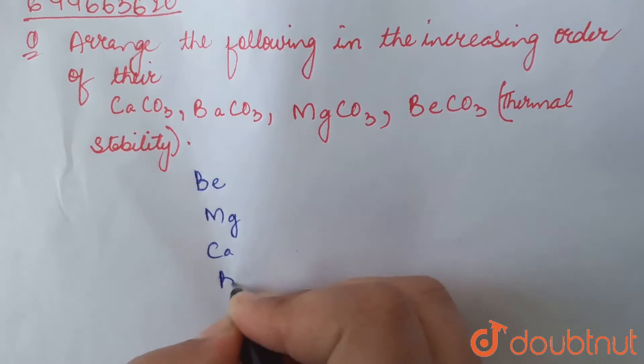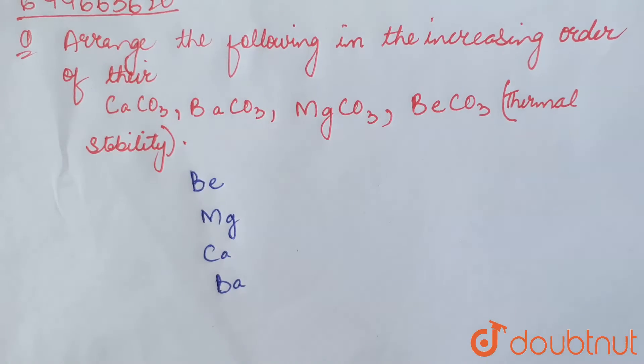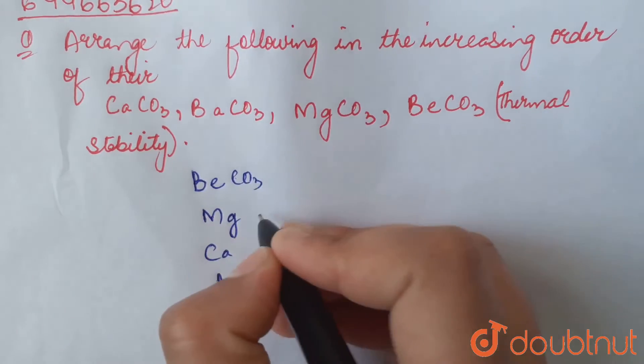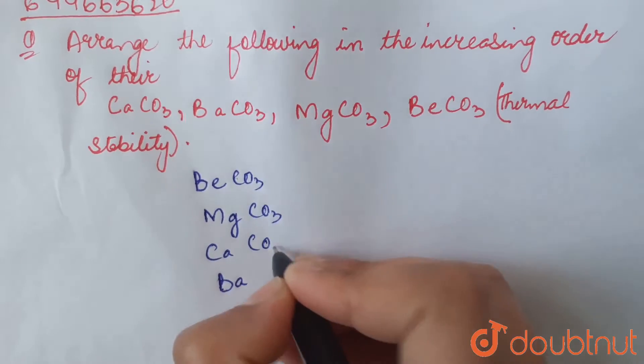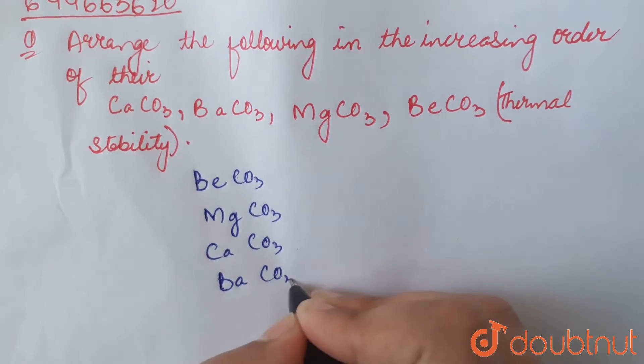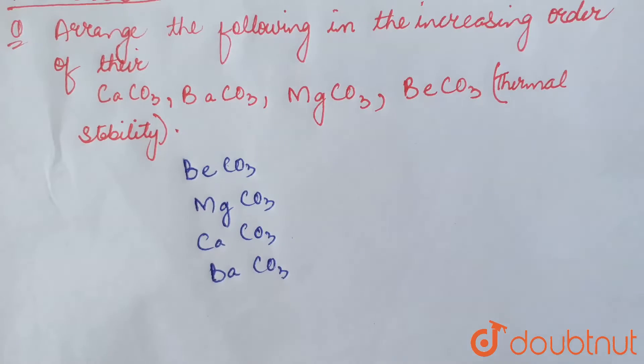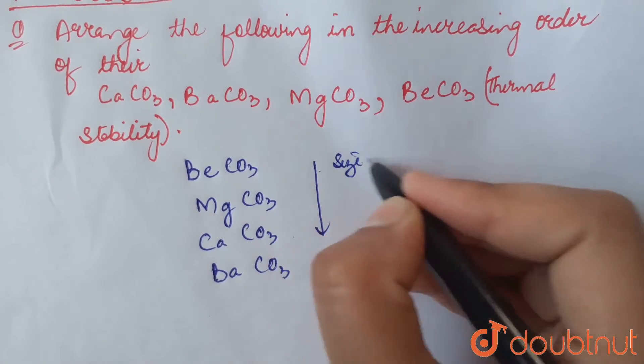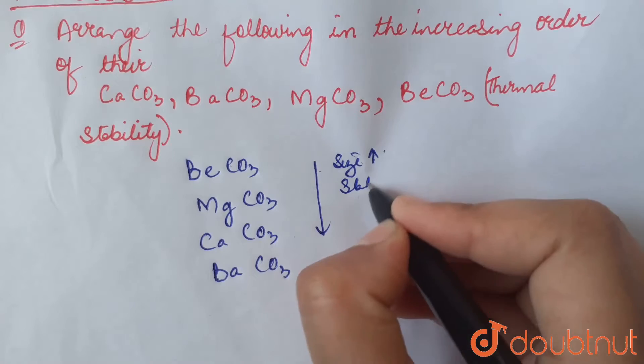...then calcium, then barium. Hence, carbonates will also occur in the same order: beryllium carbonate, magnesium carbonate, calcium carbonate, barium carbonate. As we go down the group, size increases, thus stability also increases.